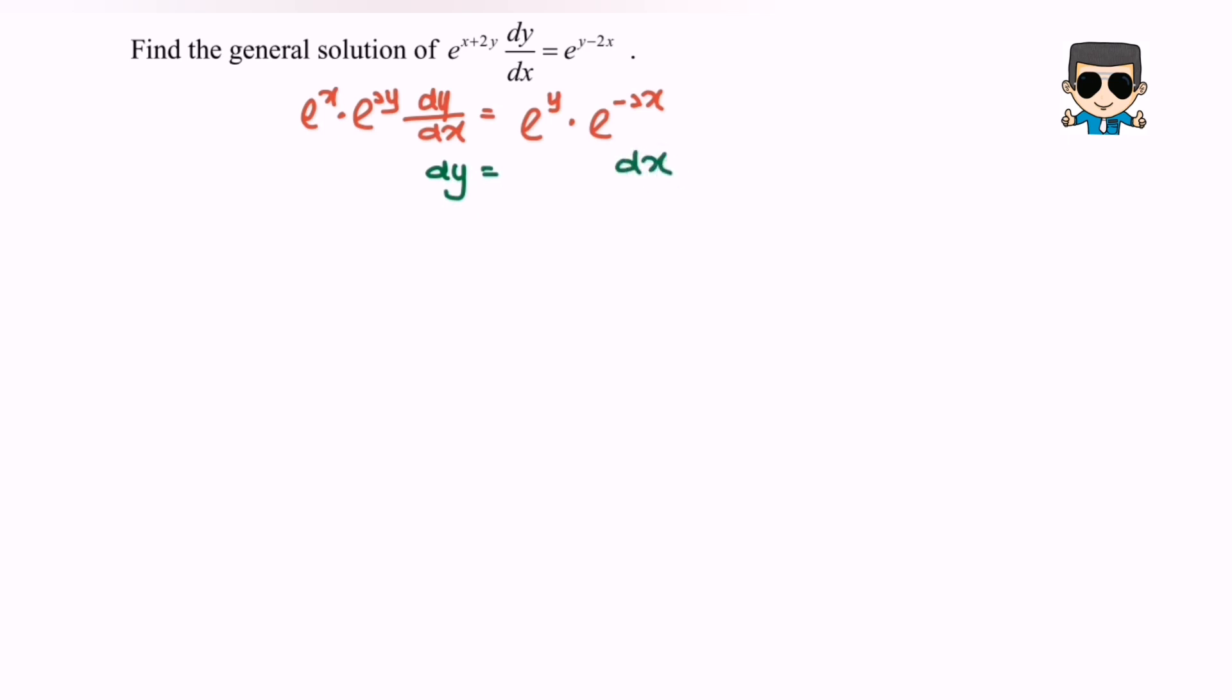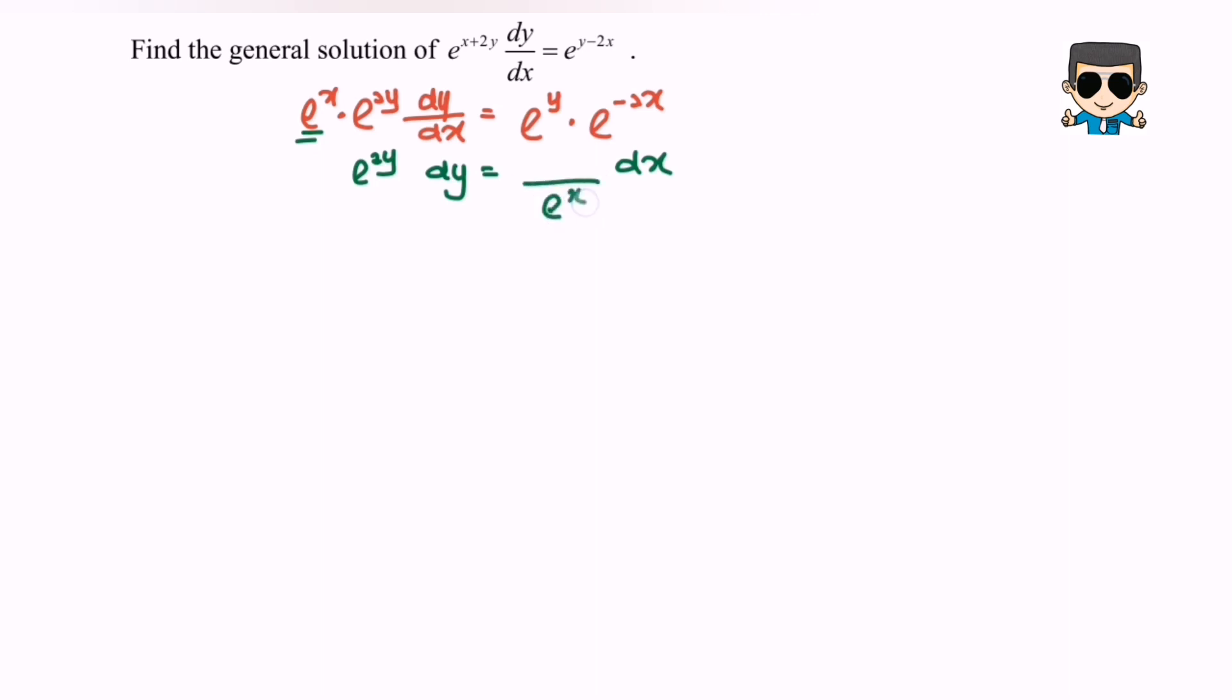Next, separate the y and x. For the left hand side we will locate the terms of y, so where we have e^(2y) over e^x. Next for e^y we will have over e^y, and for this part we have 1 over e^(2x).